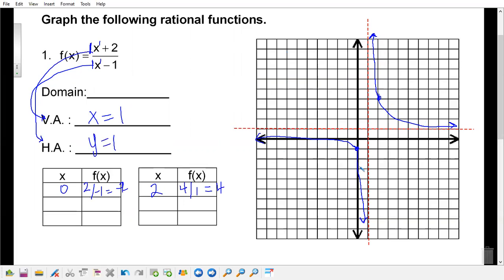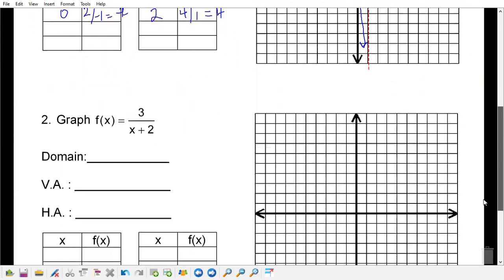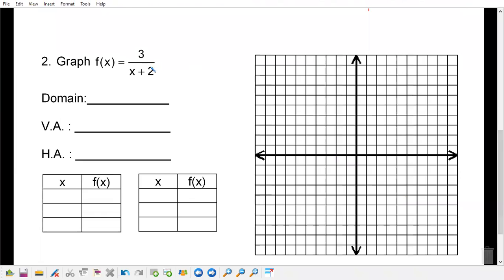All right, easy enough. So you can clearly state the domain. The domain here would be from negative infinity to one, union one to infinity. Let's try another one. So here we have three over x plus two.